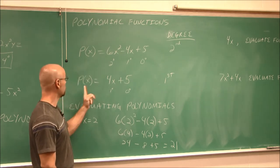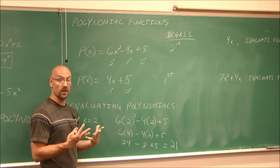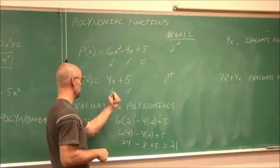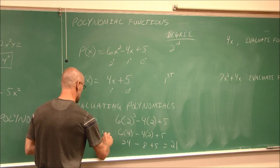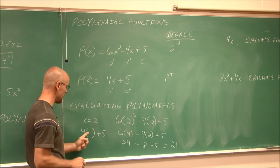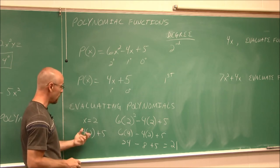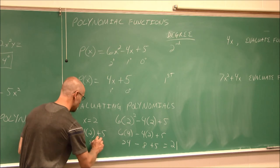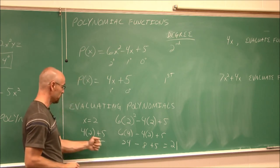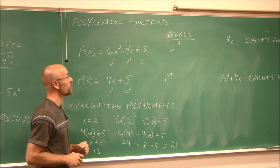All right. Let's also evaluate this one here for the value 2. And this one's a little easier because it's only a binomial. So it only has two terms. So I'm going to say 4 times some x plus 5. And I'm going to replace that x for 2 because it says x is 2. Now I can use order of operations. Multiplication before addition. 4 times 2 is 8. 8 plus 5 is 13. So we've evaluated it.